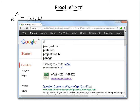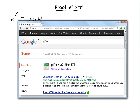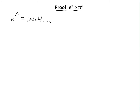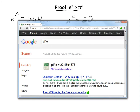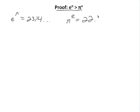And then pi to the e — this is 22.45, and it keeps going on. So pi to the e equals 22.45. As you can see, e to the pi is greater than pi to the e.